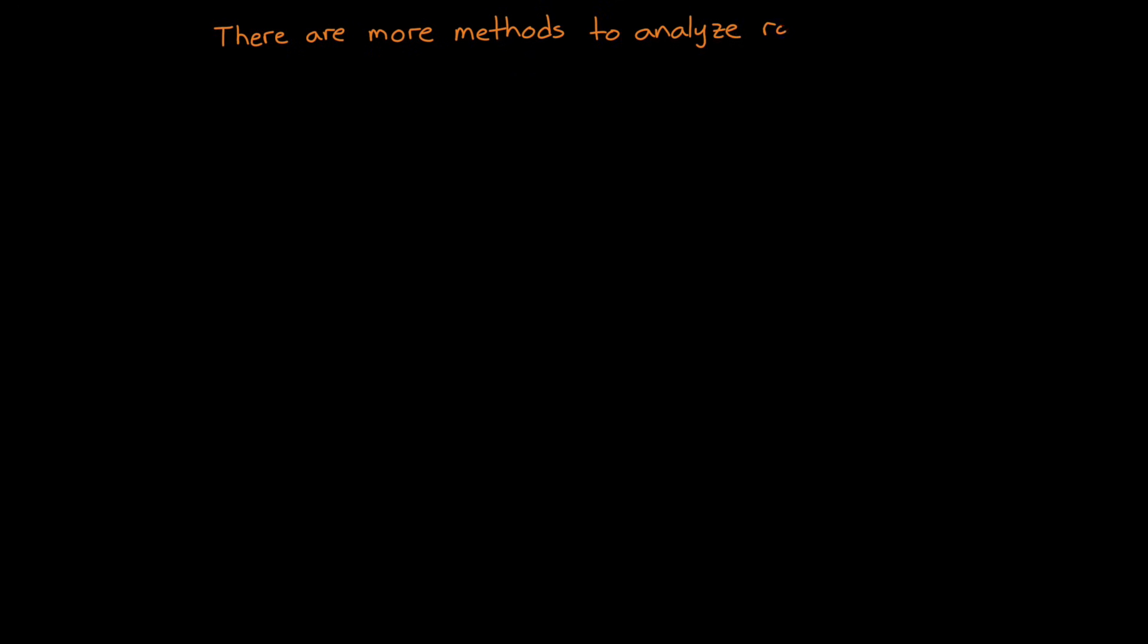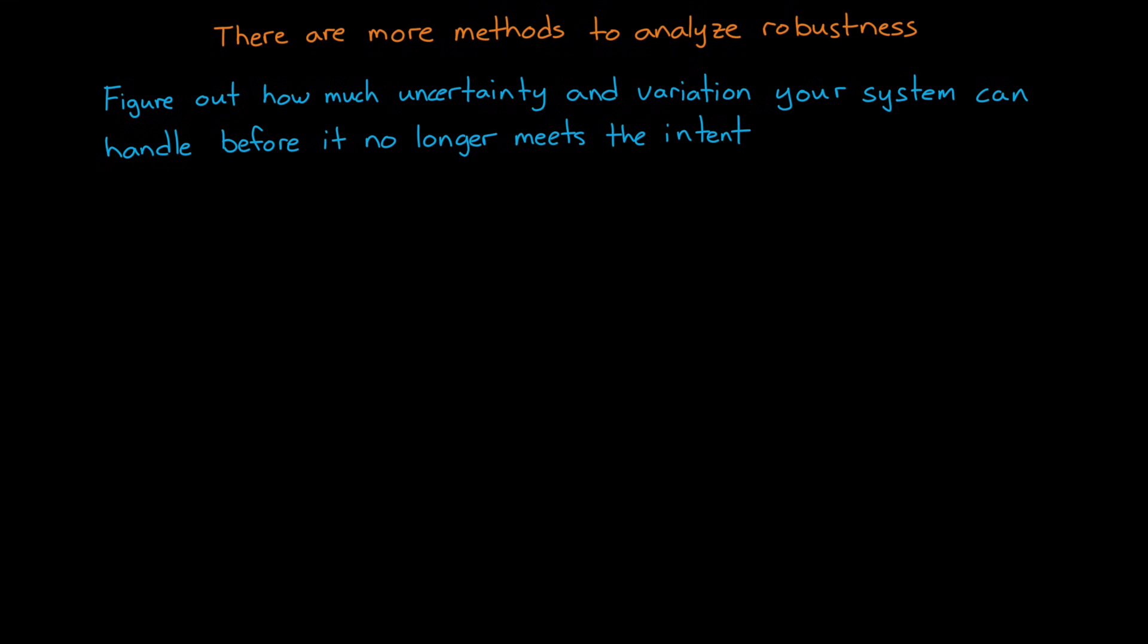Now there are more methods to analyze robustness than just these two, but the general idea is the same for every method, which is figure out how much uncertainty and variation your system can handle before it no longer meets the intent.